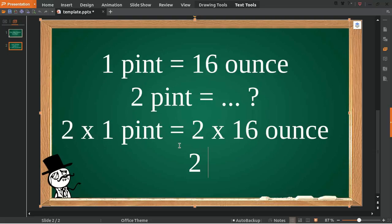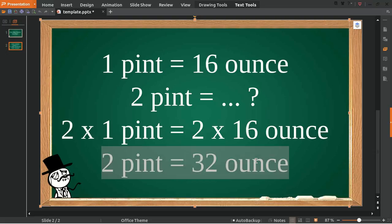2 times 1 pint equals 2 times 16 ounces, so 2 pints equals 32 ounces. That's the answer to the question. Two pints equal 32 ounces.